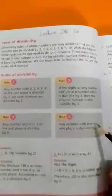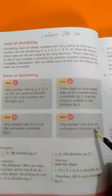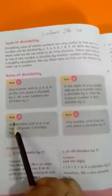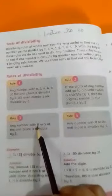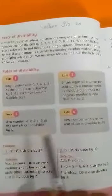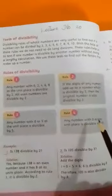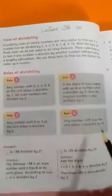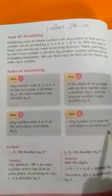This is Rule 4, students. Any number with 0 at the unit place is divisible by 10. In Rule 3, it was that the unit place is 0 or 5, it can be divided by 5. But in Rule 4, if the unit place is only 0, then it will be divided by 10. If it is 5, then it will not be divided by 10.